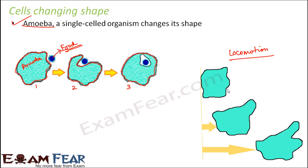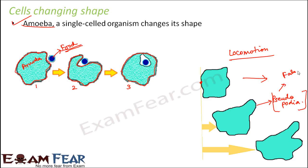For locomotion, amoeba extends itself in a particular direction — if the amoeba wants to move in one direction, it extends itself that way, gradually moving towards that direction. This happens due to the extension of a part of amoeba's body, and this is known as pseudopodia. Pseudo means false, podia means feet — so pseudopodia means false feet. There are no actual feet for amoeba; instead, its body keeps changing shape to act like feet, and that is how it moves from one place to another.